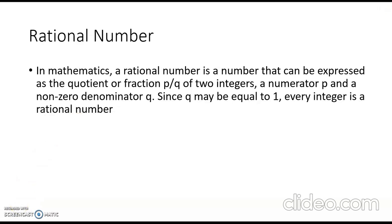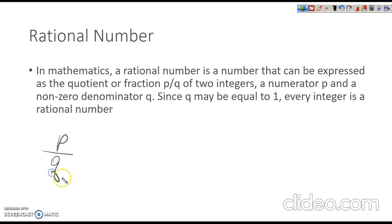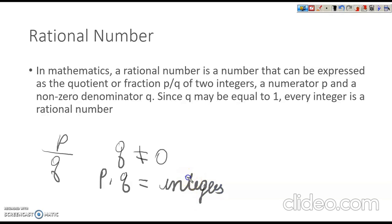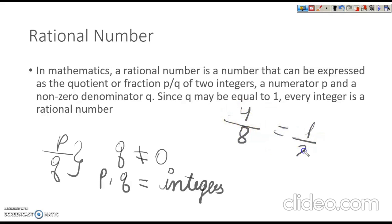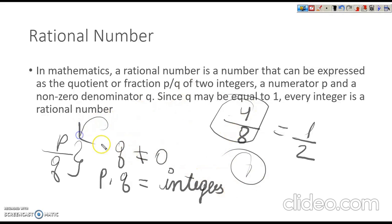Now, rational numbers. A number in the form P over Q, where Q is not equal to 0, and P and Q are integers, and P and Q are in their lowest term. What do I mean by lowest term? It means if it's written 4 over 8, we can cancel these by 4, so in lowest term it will be 1 over 2. P and Q should have no common factor other than 1. If all these properties apply, we can call this a rational number.